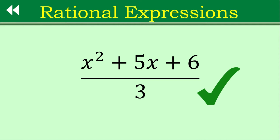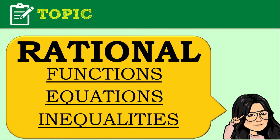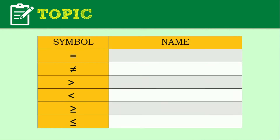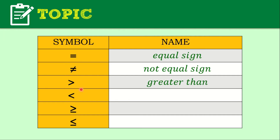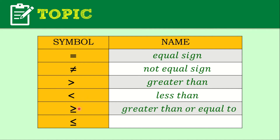We are done with the review for rational expressions. Let's jump into the highlight of this session: rational functions, rational equations, and rational inequalities. Before defining each, let's recall the basic symbols of equalities and inequalities. We have: equal sign, not equal sign, greater than, less than, greater than or equal to, and less than or equal to. It's just a review of the different symbols we will encounter as we progress with our lesson.